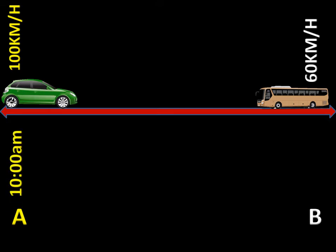Let's say the car started earlier at 10 a.m. We take the car to be starting its journey at 10 a.m. And let the bus leave station B at 10:30 a.m. So the car started earlier from 10 a.m., and after 30 minutes the bus will now begin its journey from town B towards A.